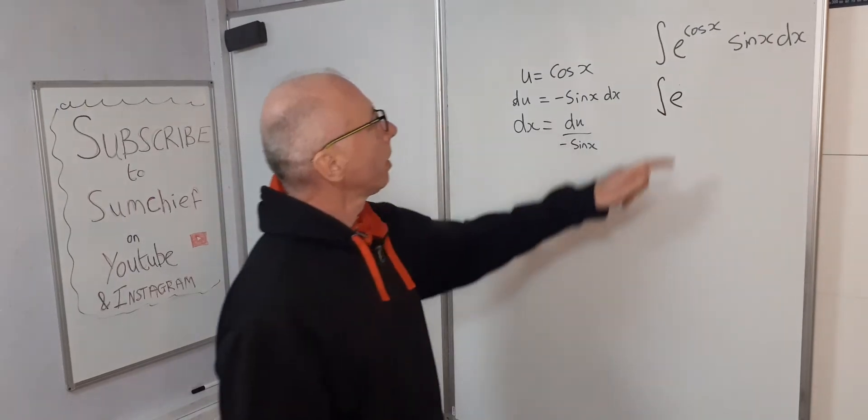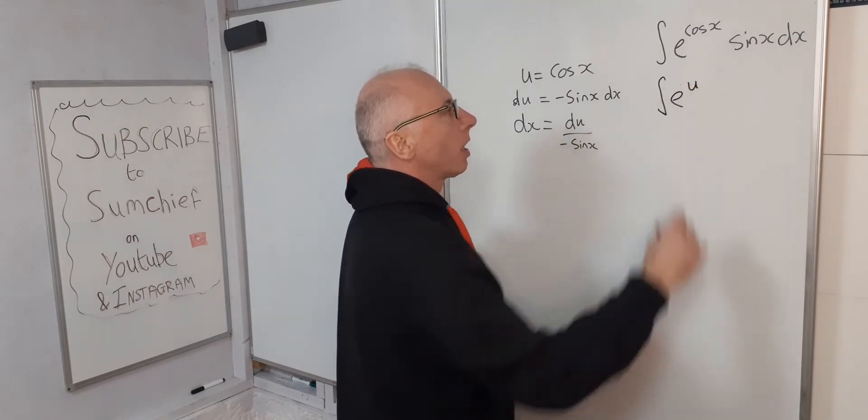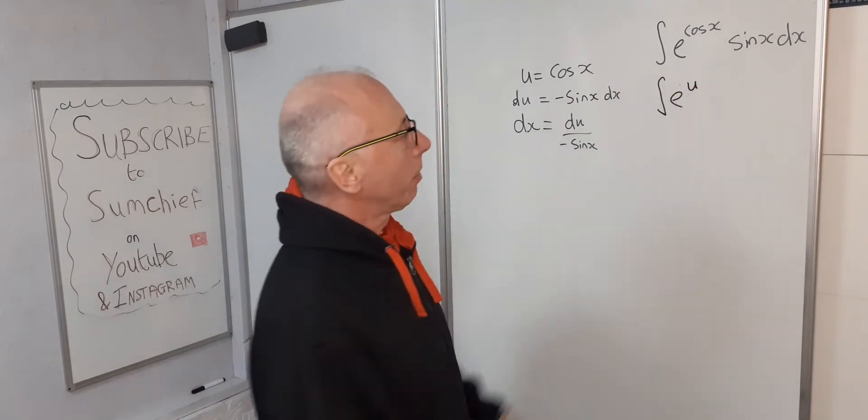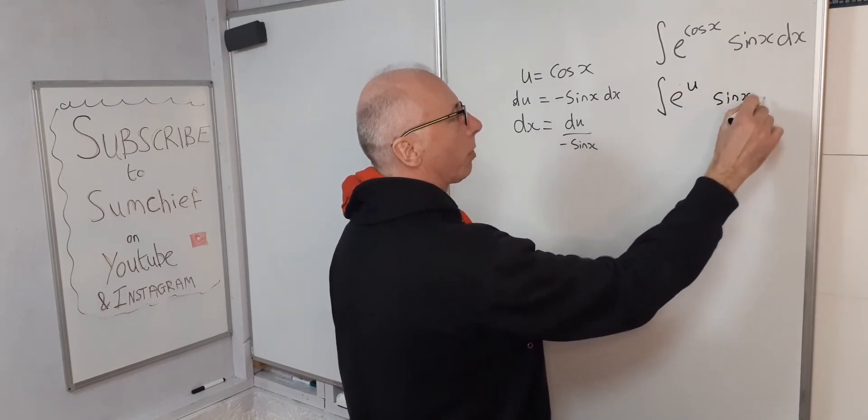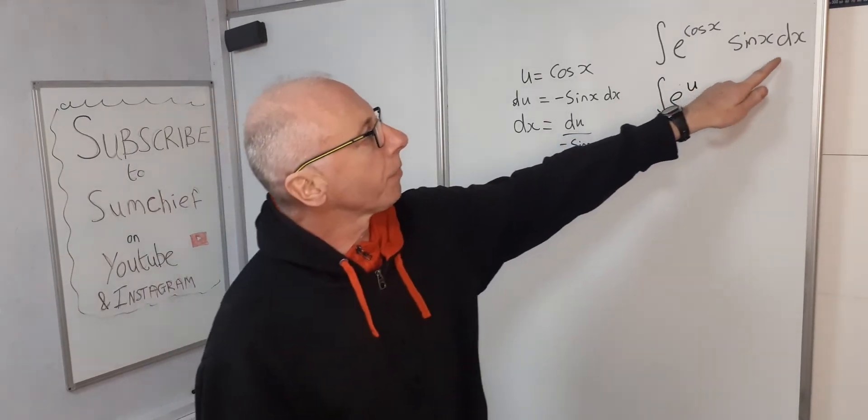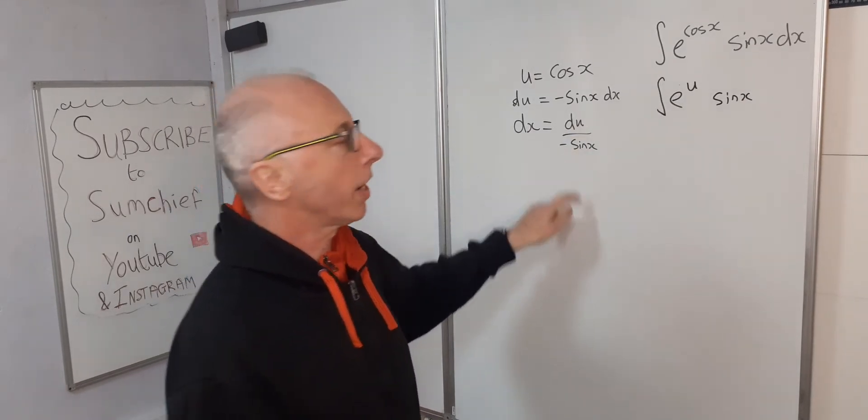So e that stays. Cosine x - cosine x is u. Sine x - I'm just going to leave that in there for the moment. I know it's an x one but you'll see what happens. Good things are going to happen in a minute. And then dx. Well, dx equals du over negative sine x.